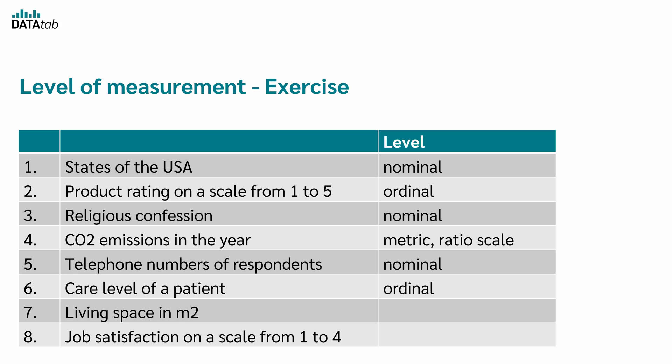Living space in square meters is measured on a ratio scale. Like CO2 emissions, zero square meters mean there is no living space, and comparisons like double or half are meaningful. Lastly, we have job satisfaction on a scale from 1 to 4. This is ordinal data. It ranks satisfaction levels, but the difference between each level isn't quantified.